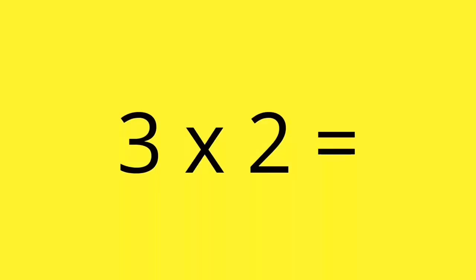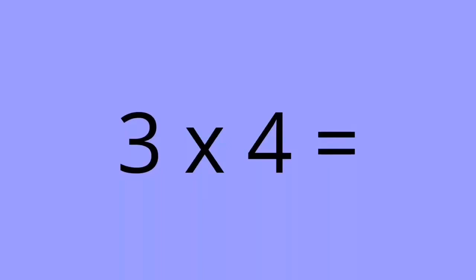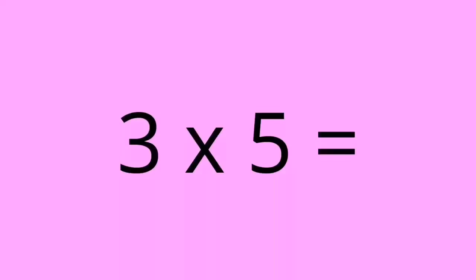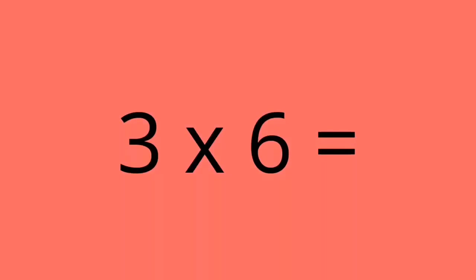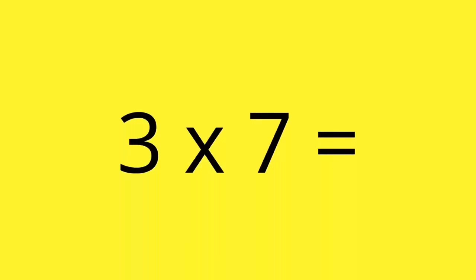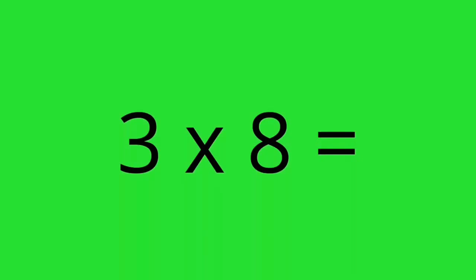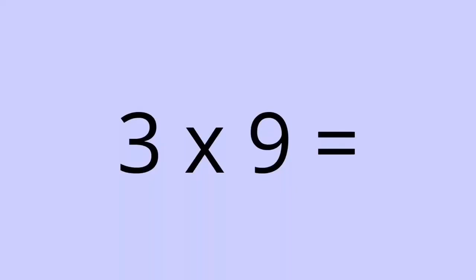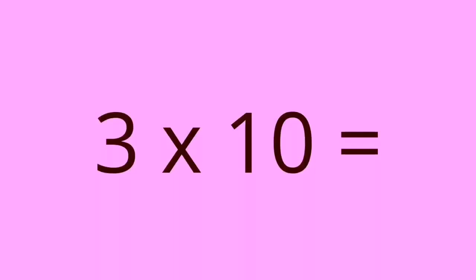3 times 1 equals 3. 3 times 2 equals 6. 3 times 3 equals 9. 3 times 4 equals 12. 3 times 5 equals 15. 3 times 6 equals 18. 3 times 7 equals 21. 3 times 8 equals 24. 3 times 9 equals 27. 3 times 10 equals 30.